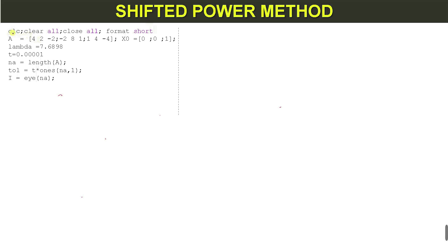First we write the initial commands: clc, clear all, close all, and format short to get the solution up to four decimal places. Next we write the initial information, that is the given matrix A.